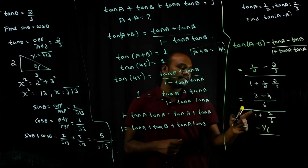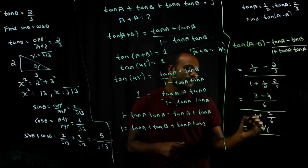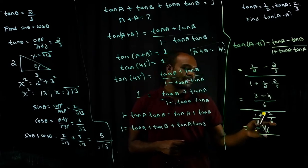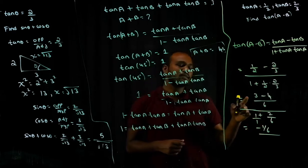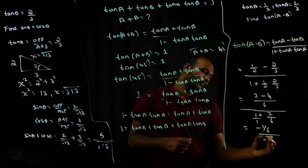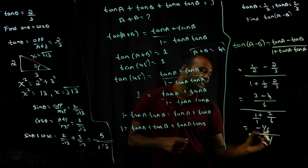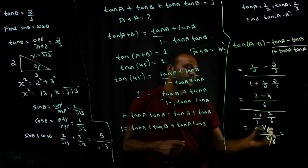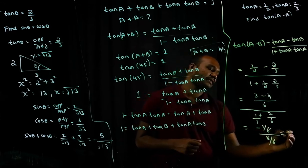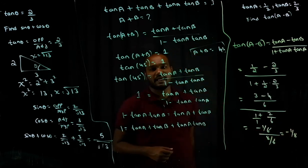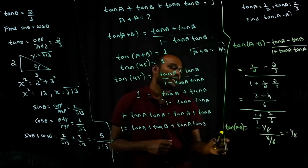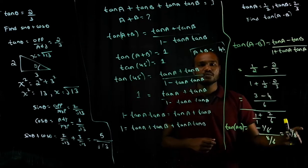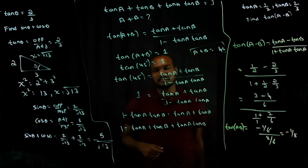So the numerator is minus 1 by 6. In the denominator: 1 plus 1 by 2 times 2 by 3. If there is nothing it means divided by 1, so 6 into 1 is 6, plus 1 into 2 is 2, giving 8 over 6. Cancelling the 6s, we get minus 1 by 8. So tan of (A minus B) is minus 1 by 8.